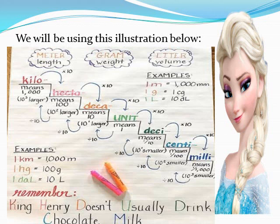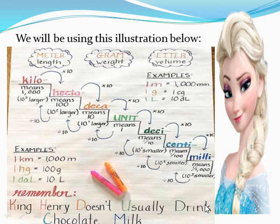Do you remember our mnemonic — King Henry Doesn't Usually Drink Cold Milk? The King represents Kilo, Henry represents Hecto, Doesn't represents Deca, Usually represents the unit, Drink represents Deci, Chocolate represents Centi, and Milk represents Milli. Our basic unit for capacity is liter.